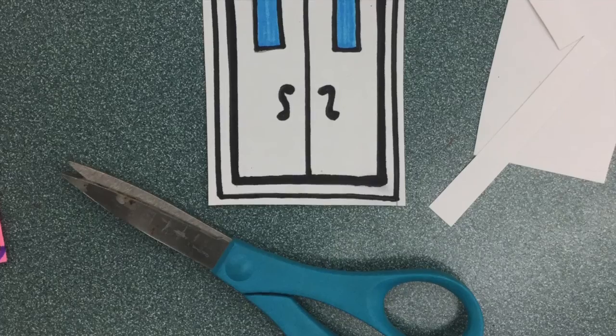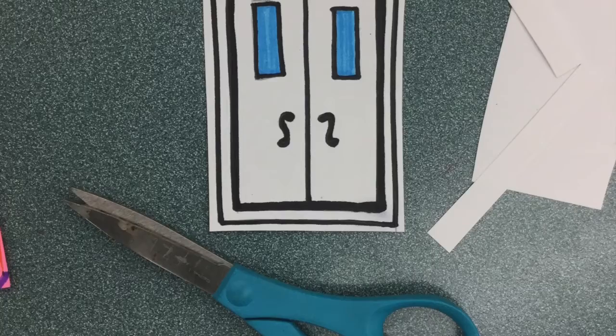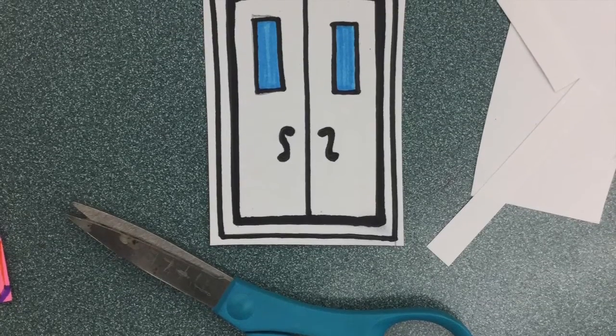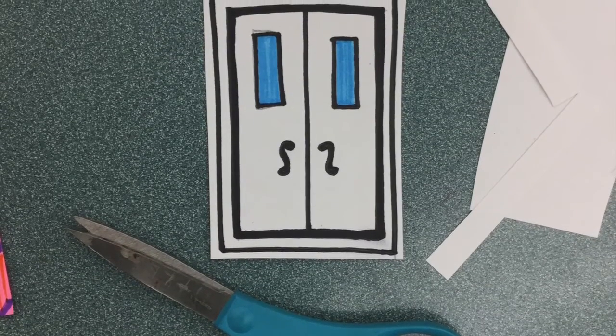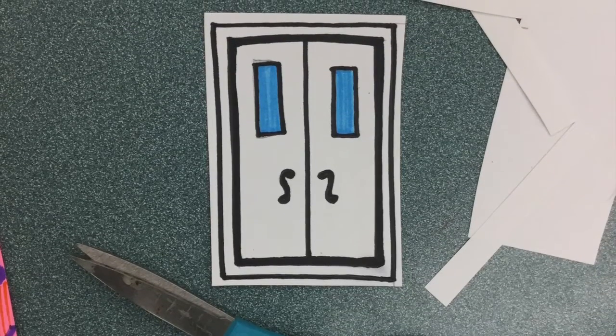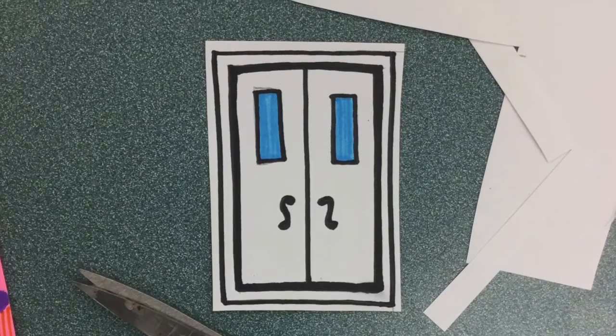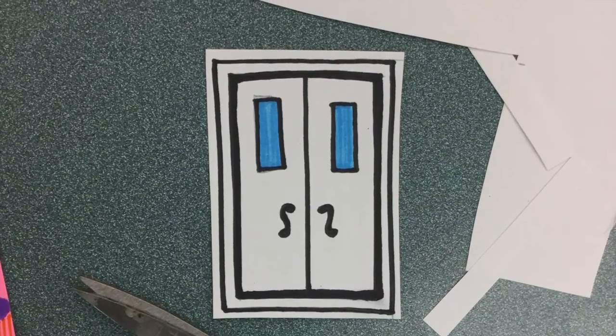When you're ready, you are going to cut that door out. But wait! Like the windows, we are not going to cut on the line. We are going to cut around the outside of the door, just outside the line. This helps it to stand out when we glue it onto our wild and crazy patterned background.